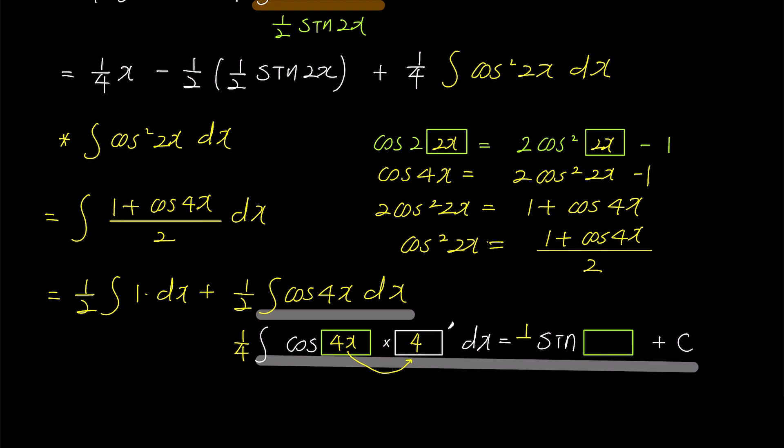Next, we multiply quarter on the right side as well, and in the green box, we put 4x, just like the left side, and add c. This completes the integration of cosine 4x.